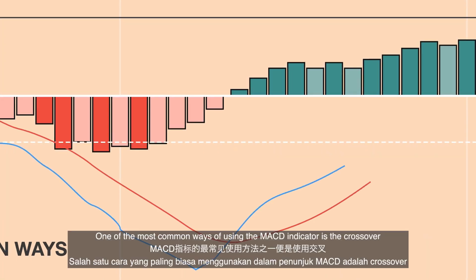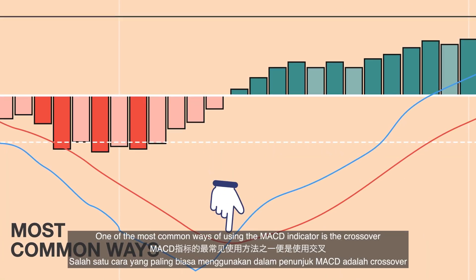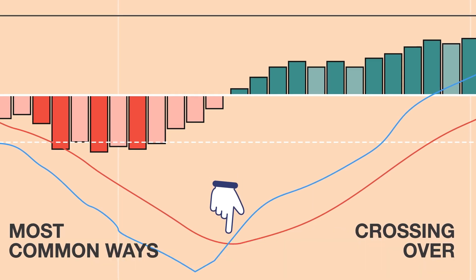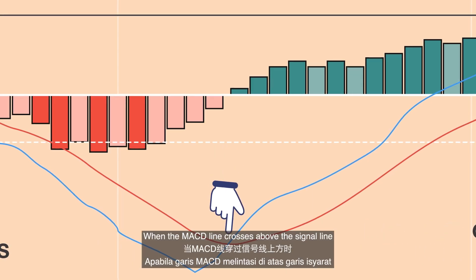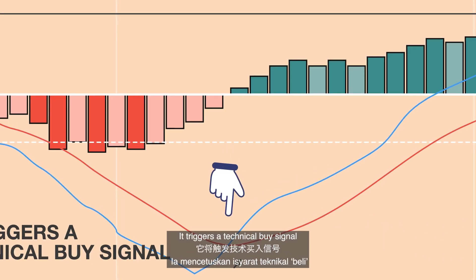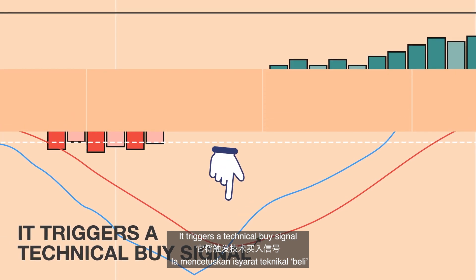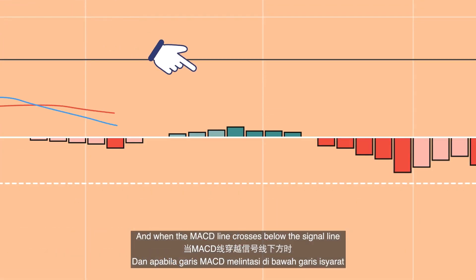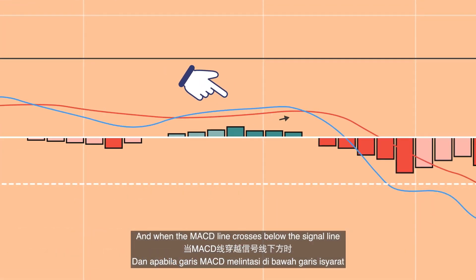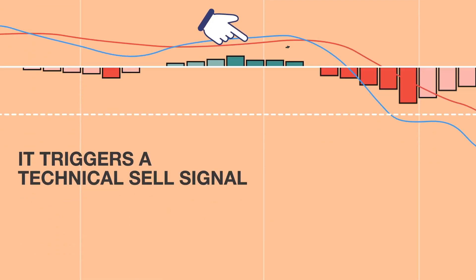One of the most common ways of using the MACD indicator is the crossover. When the MACD line crosses above the signal line, it triggers a technical buy signal. And when the MACD line crosses below the signal line, it triggers a technical sell signal.